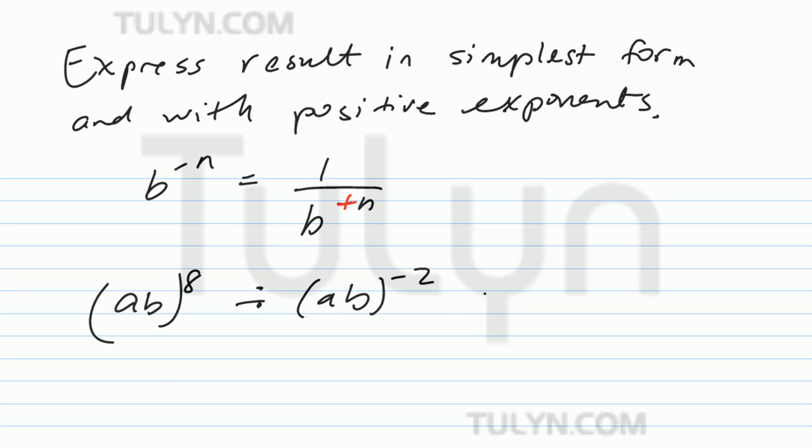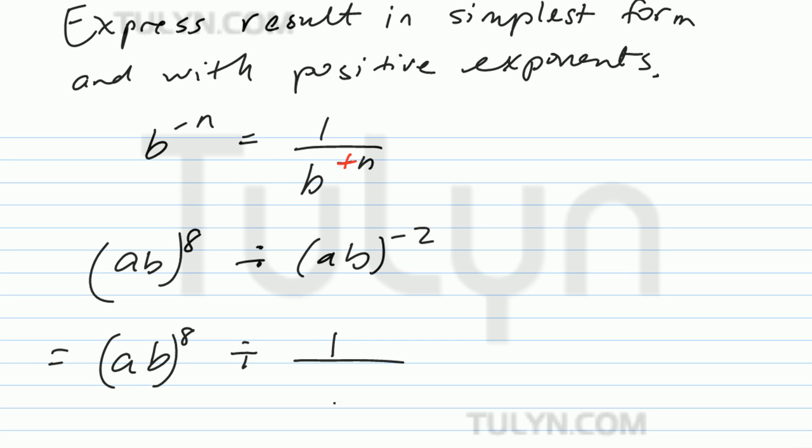In order to do that, we could just rewrite this. Keep the positive powers the same, but the negative power, rewrite that as a reciprocal with positive exponents, so 1 over ab to the negative 2nd power.